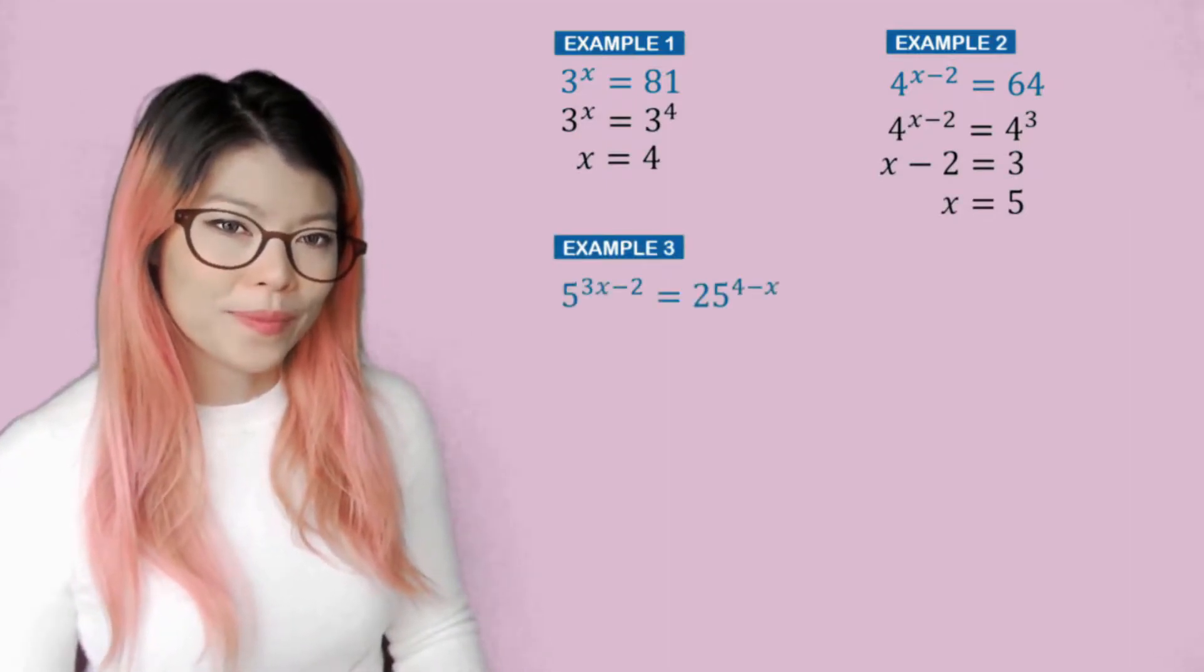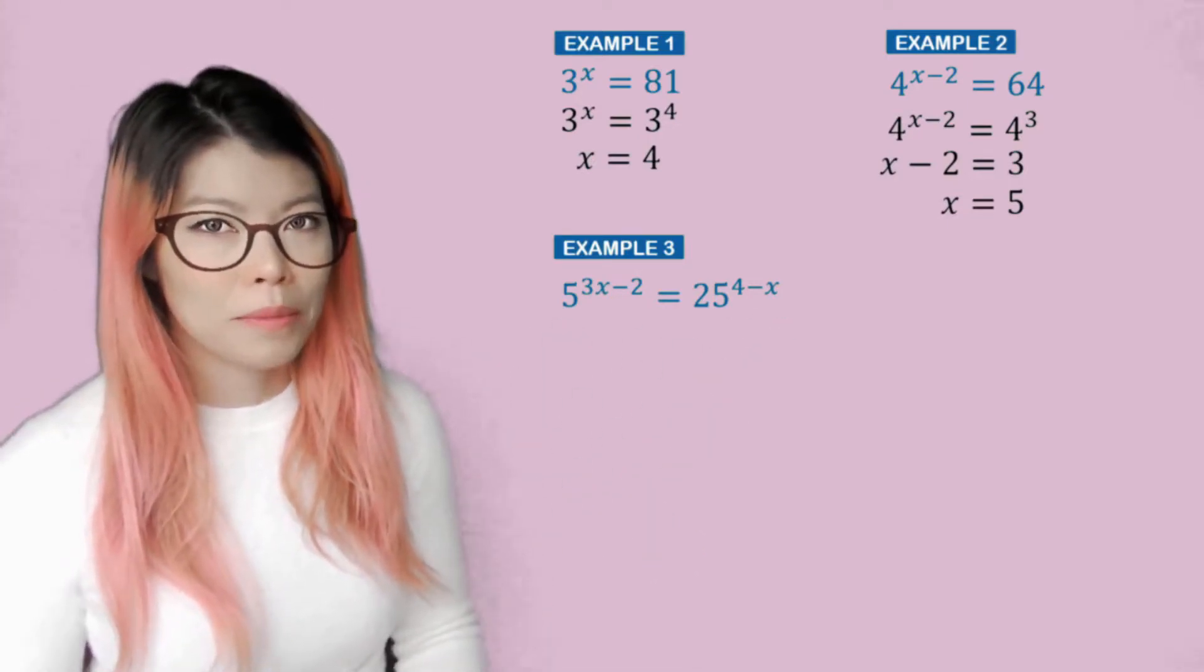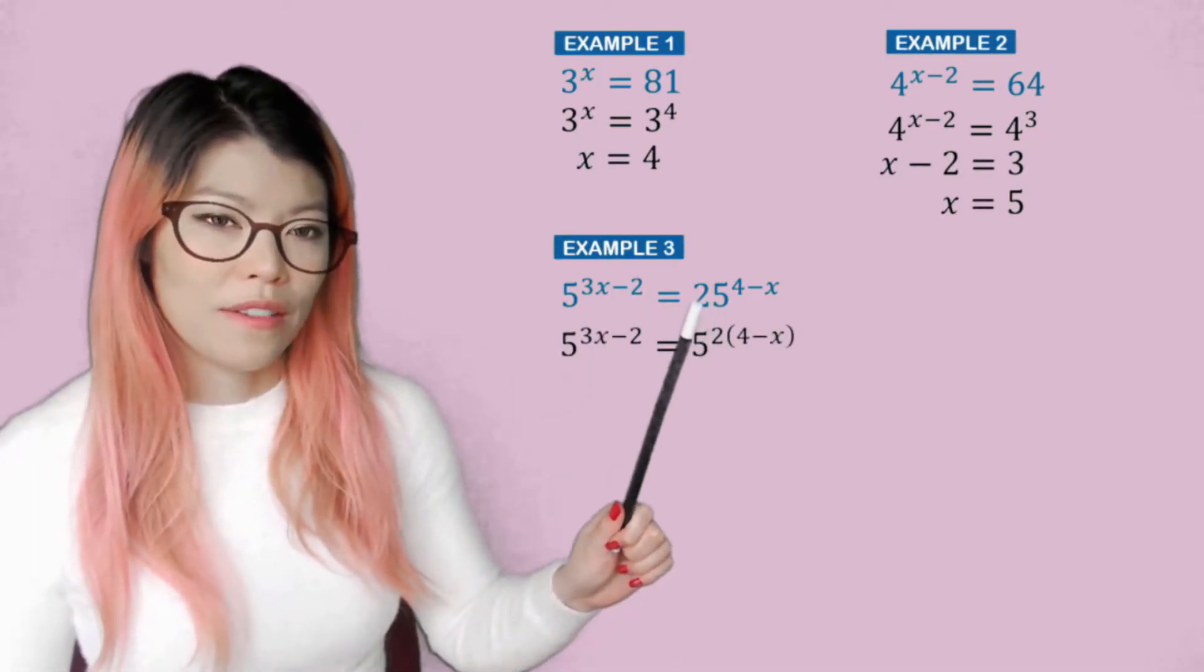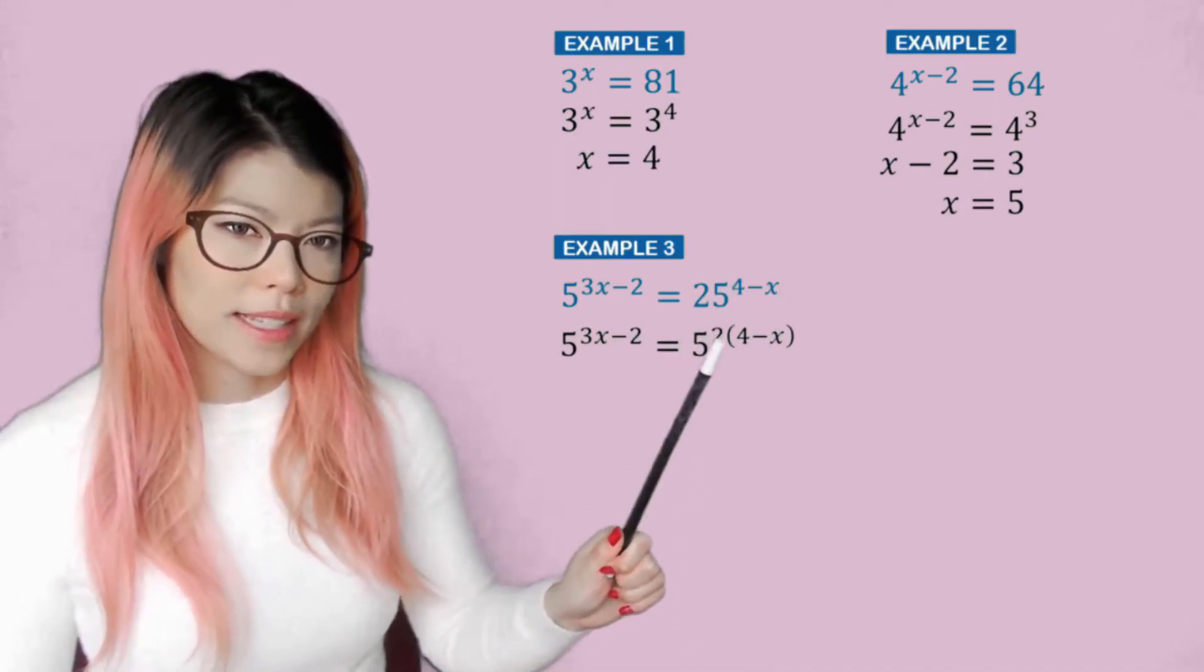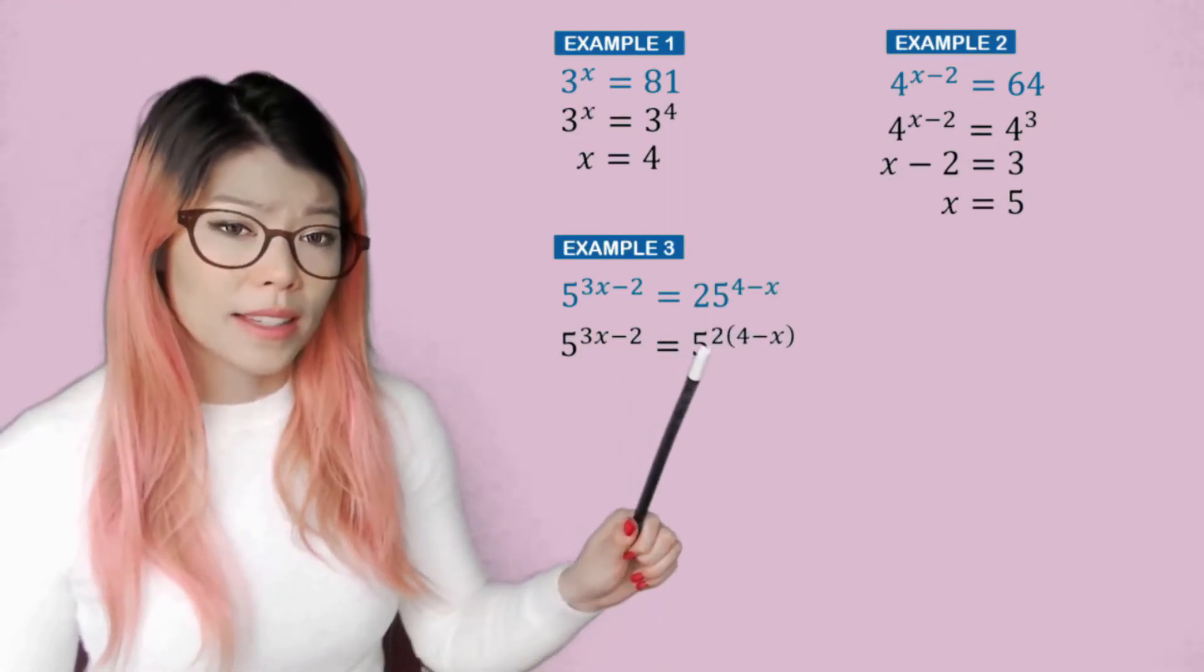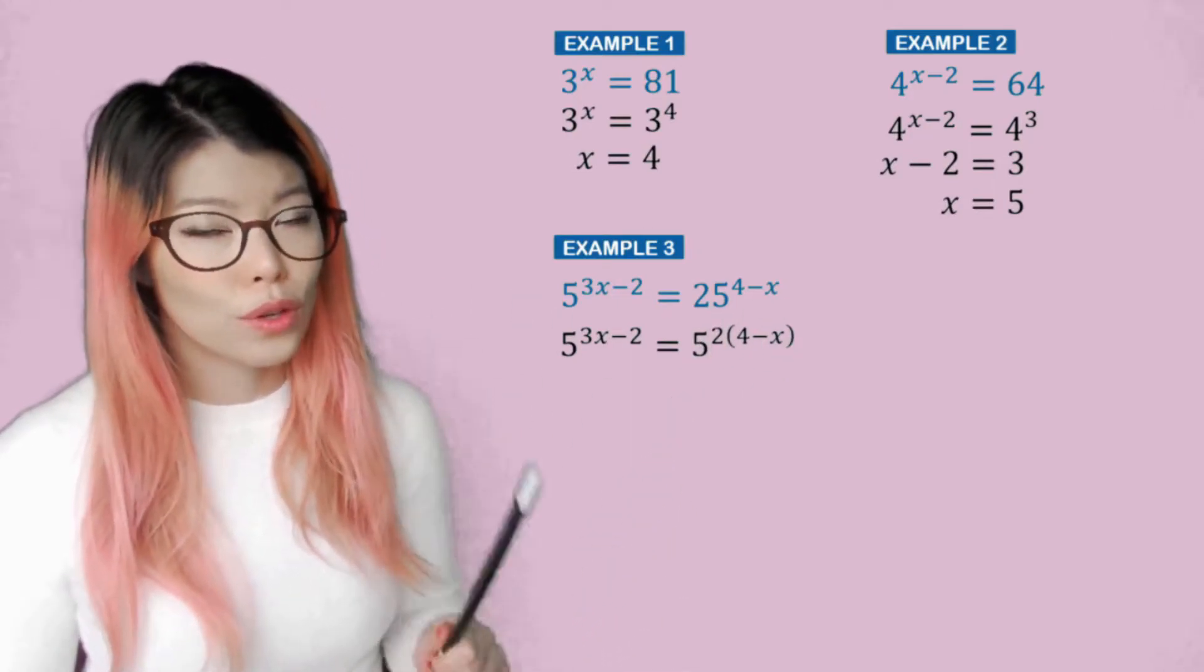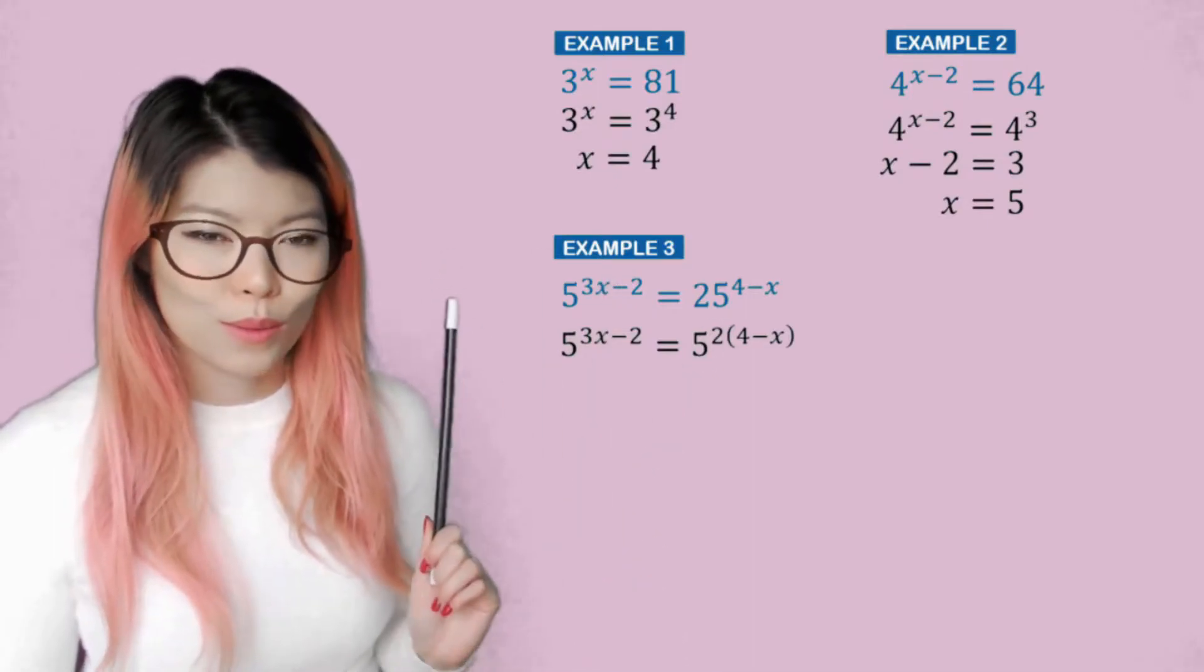Example 3. Again, you can always pause after the blue writing and then do your working out and unpause to check whether you've done it correctly or not. So again, 25 can be written as 5 squared. So I'm going to just bracket that up before I multiply so I don't make silly mistakes. A common mistake I see is that a lot of students just multiply the 2 by 4, but they forget to multiply the 2 by the negative x. If you know you're one of those people that make those silly mistakes, use brackets, always use brackets.